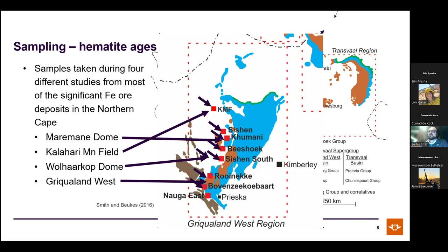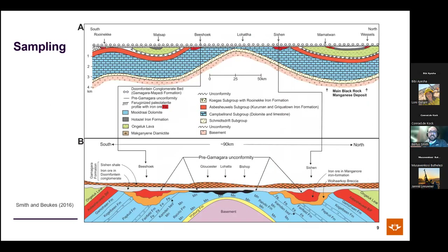The Prighamagaro or Maperi unconformity is shown: wherever this unconformity cuts through any iron formation in the Transvaal Supergroup, a high-grade iron ore is seen straddling it, with clastic ores sometimes also occurring above it.